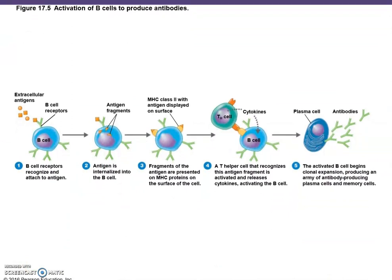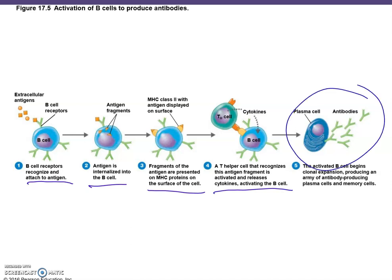With the activation of B cells to produce antibodies: Step 1, the B cell receptor recognizes and attaches to the antigen. Then the antigen is internalized into the B cell. Fragments of the antigen are presented on MHC proteins to the surface of the cell. Step 4, the helper T cell that recognizes this antigen fragment is activated, releases cytokines, and that activates the B cell. Then we go through clonal selection — like making a custom item, it takes trial and error and time.